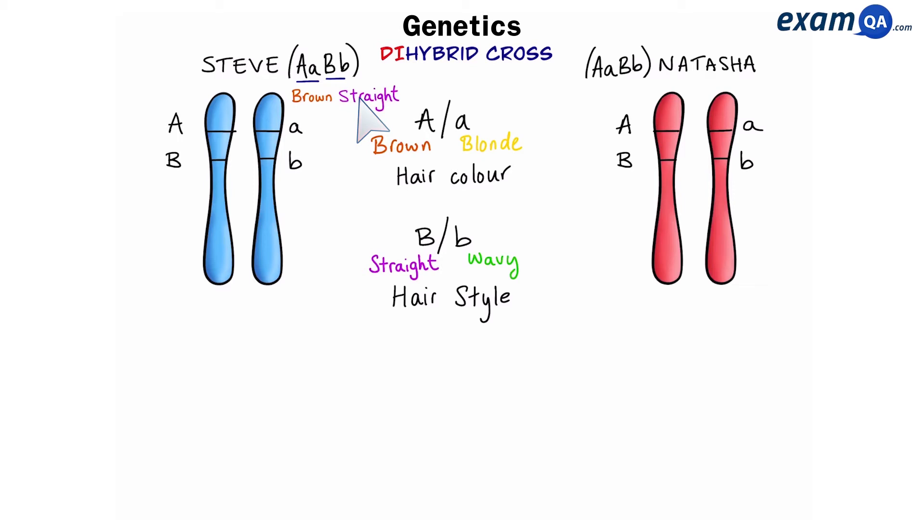Notice that we always put one gene at a time. So we do all of the A's, and then we do all of the B's. Again, for Natasha, brown and straight. Perfect. These are both heterozygous individuals.